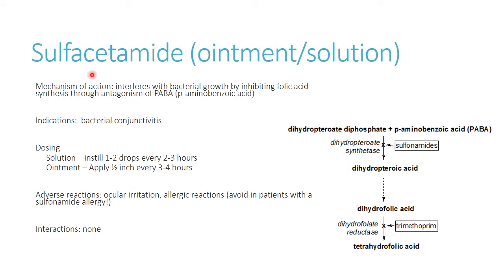Sulfacetamide is also available by itself, with the same mechanism as sulfamethoxazole — affecting folic acid synthesis. The key thing to note is if a patient has a sulfa allergy — like a specific sulfonamide allergy to Bactrim or Septra — they could have a local reaction here as well. They're probably not going to go anaphylactic, but it could worsen inflammation. I see this one most often used in fast-track ED encounters, though erythromycin and Polytrim are probably the most common.